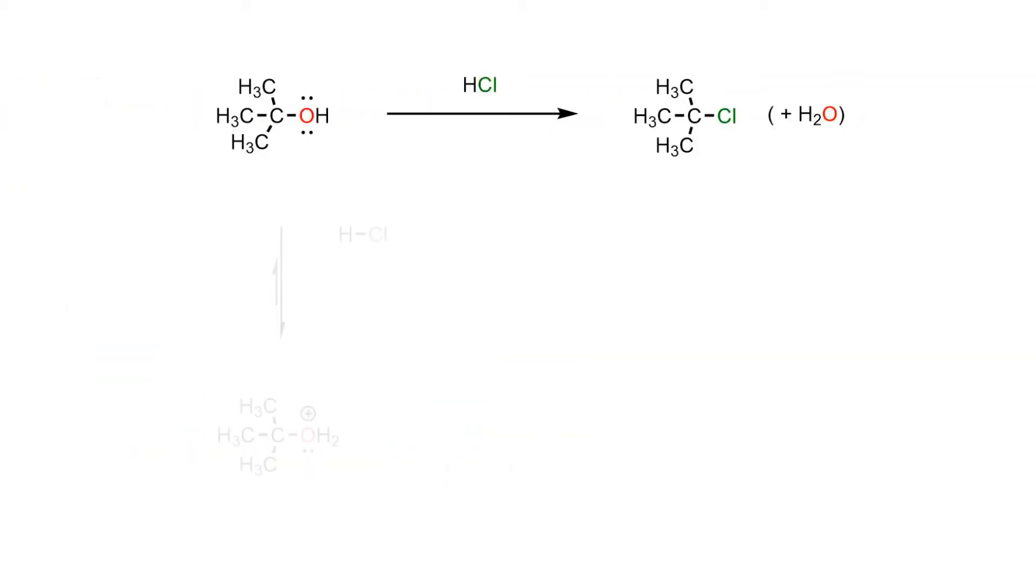The first step in the process is a fast acid-base reaction in which the hydroxyl of the alcohol is protonated by the powerful acid, thus producing the oxonium species.